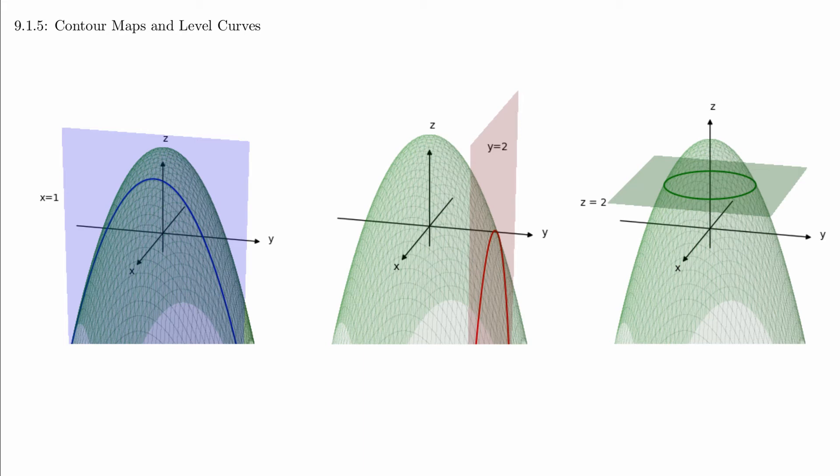In other words, a level curve tells us all the points on the graph that are at a specific height. This gives us another way to understand the shape or behavior of a function.